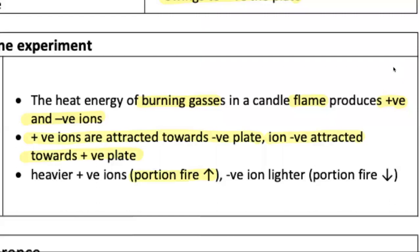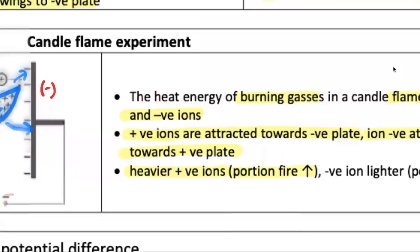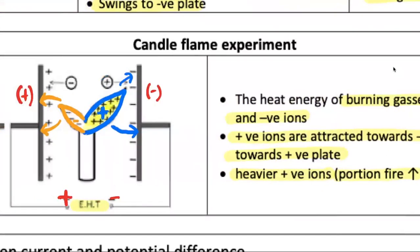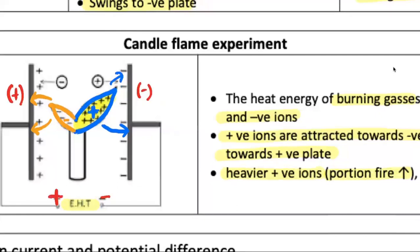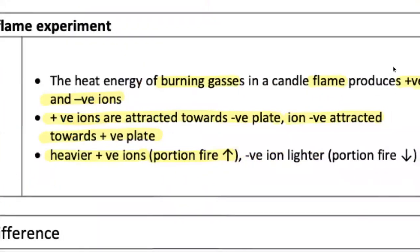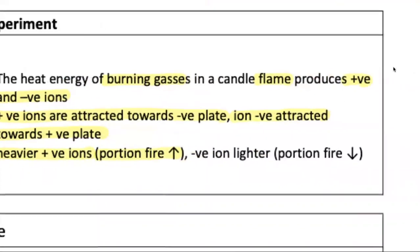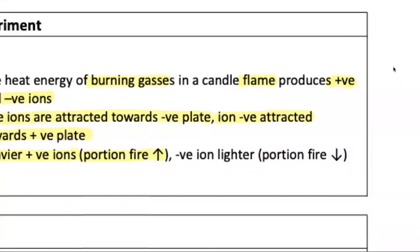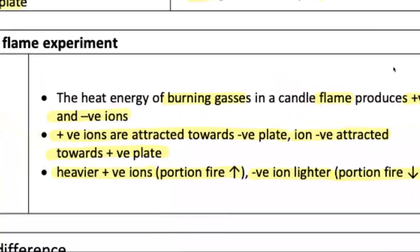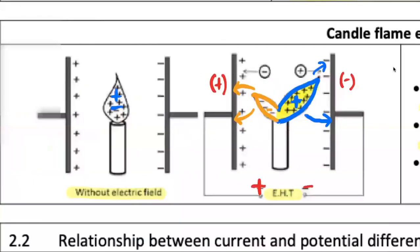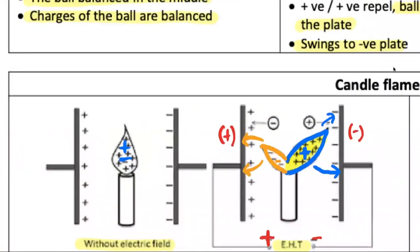If the portion of fire is greater, it means the ions are heavier. The side with the greater flame falls on the positive side, so positive ions are heavier. The side with the lesser flame means the ions are lighter — those are the negative ions. This is your first part of subtopic 2.1 in Chapter 2, which is about electricity.